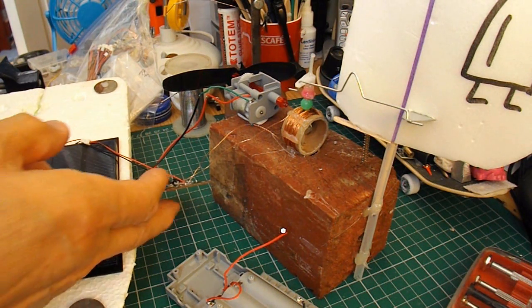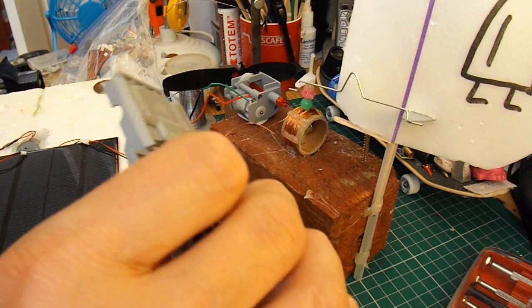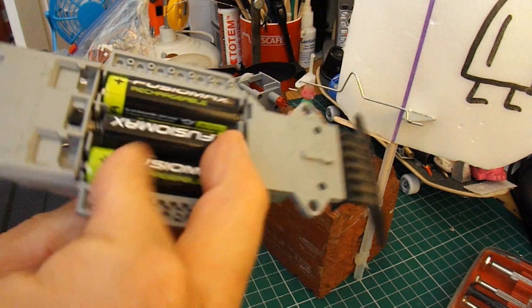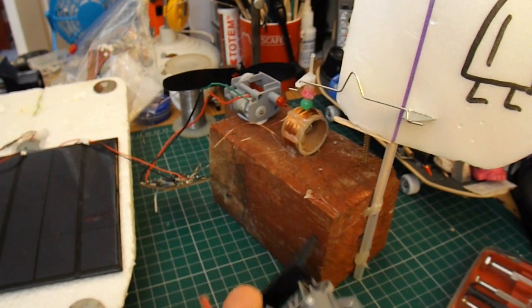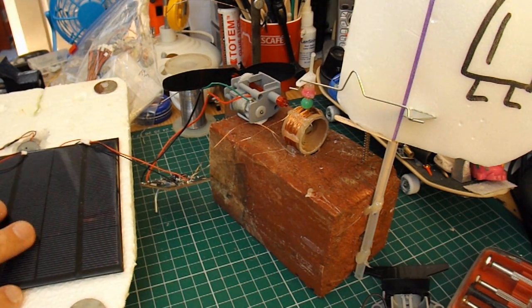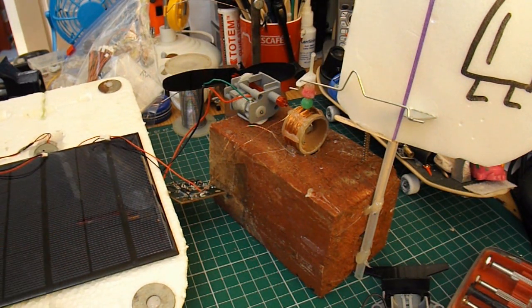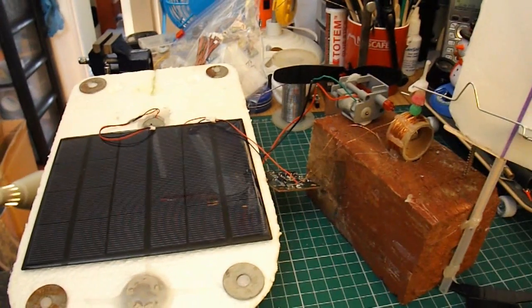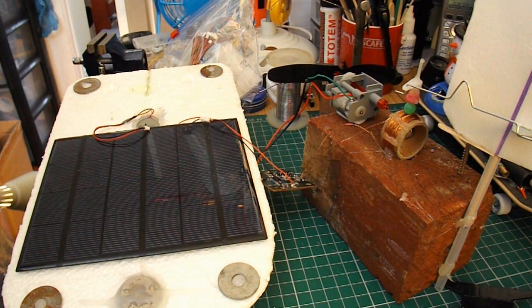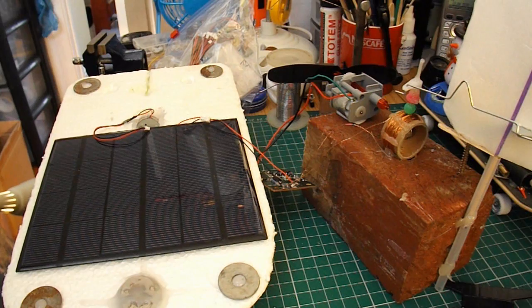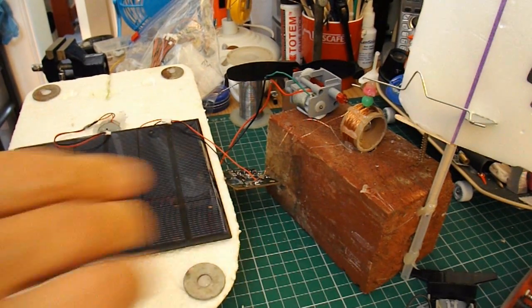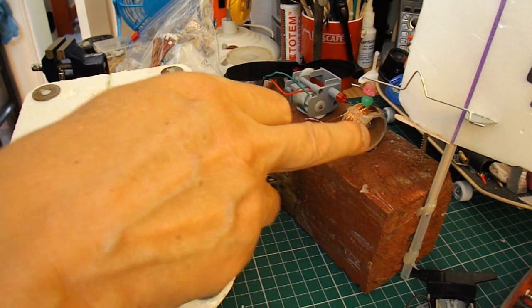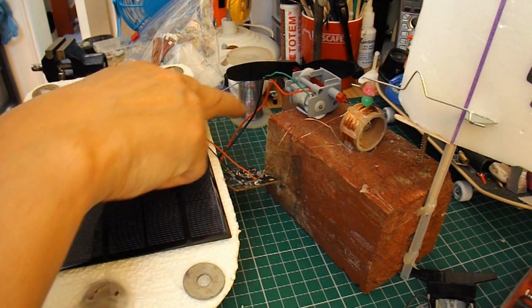Well, I've got the receiver out of the little car which uses three AA batteries, so that's four and a half volts. I could just see whether this solar panel, which I use on one of my solar boats, can give us enough power to actually power that little receiver and that steering, and that motor for that matter.